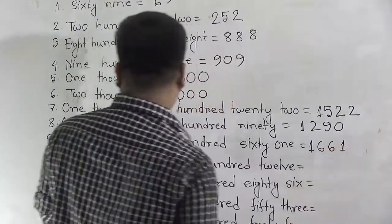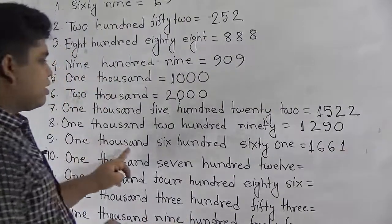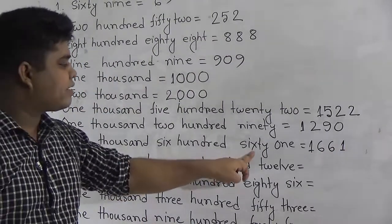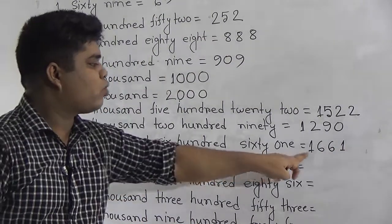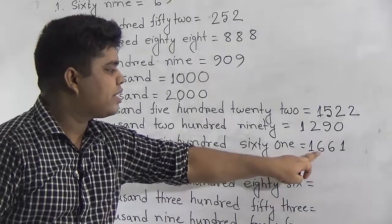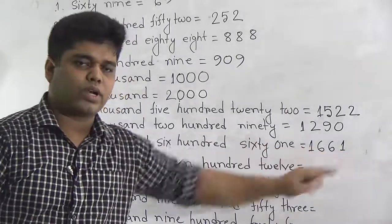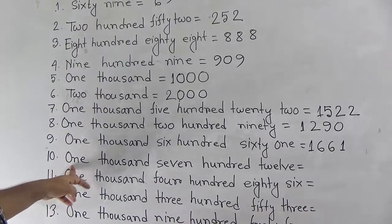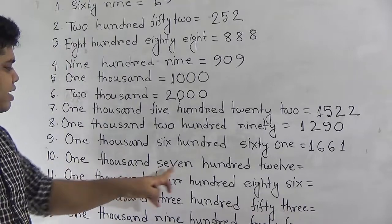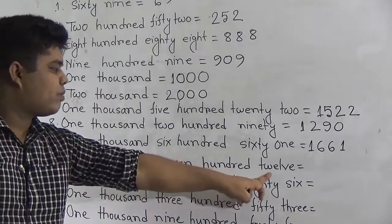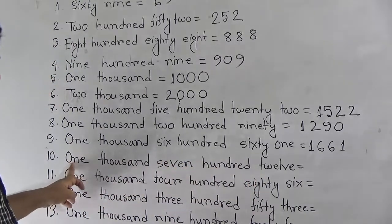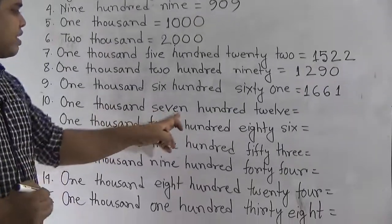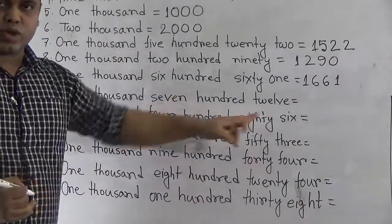We write 1,661. Our next number is 1,712. 1,712 — write first 1,000, then 700, then 12 means 1 and 2, so it is 1,712.